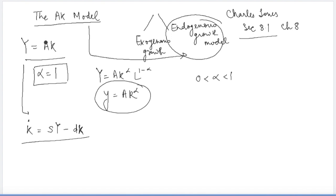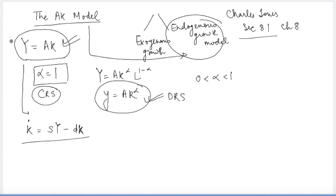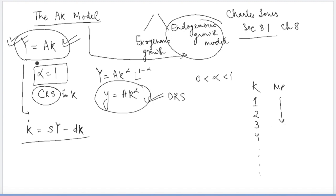The difference between the production function of the AK model and other models is the difference in the alpha value. You will also notice that the AK production function follows constant returns to scale, whereas the production functions we studied before followed diminishing returns to scale. This means that if you add one unit of capital, you get the same unit change in output. If you keep adding capital — one unit, then another, then another — under diminishing returns the marginal product falls, whereas under constant returns to scale the marginal product remains constant.